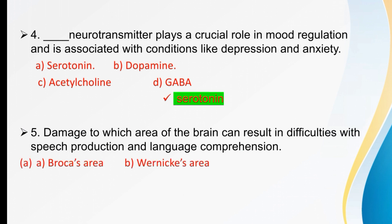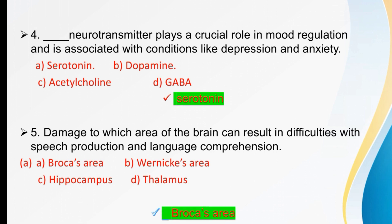Damage to which area of the brain can result in difficulties with speech production and language comprehension? Options are Broca's area, Wernicke's area, hippocampus, or thalamus. The right option is Broca's area — damage to this area of the brain can result in difficulties in speech production and language comprehension.